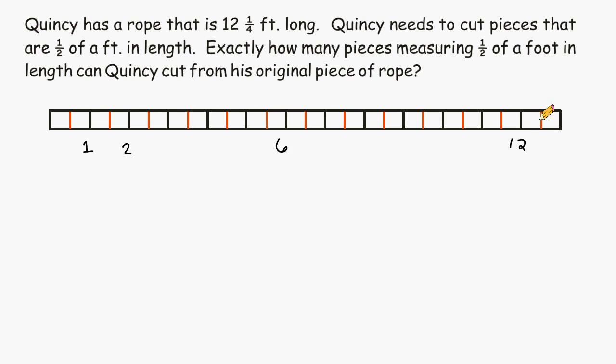And Quincy has twelve and a quarter feet of rope. So what we have to do is take these last two halves and break those into quarters. So the length of Quincy's rope starts here and it goes one-quarter past twelve. So we are going to shade all the way up to this point right here.